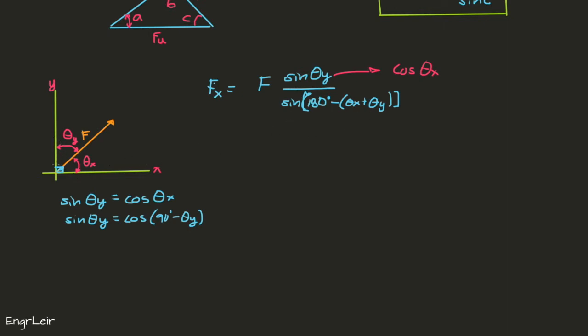Now looking at this denominator, since the axes are perpendicular, then theta x and theta y must sum to 90 degrees, and the whole equation below simplifies to the sine of 90 degrees, which is equal to 1. Since that is 1, I'm telling you that this value here becomes F sub x is equal to F times cosine theta x.